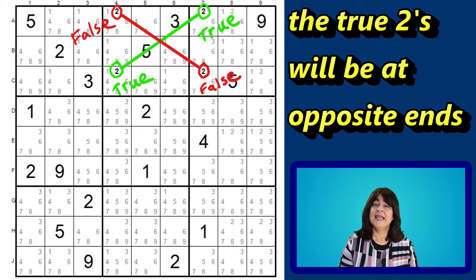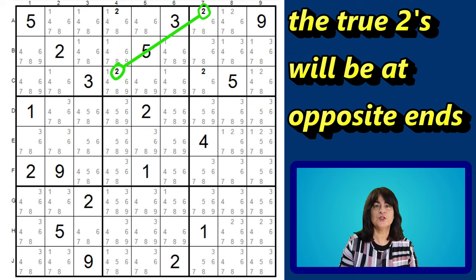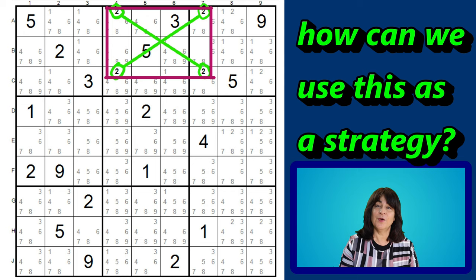In either case, the true twos will be at opposite ends of the X, or opposite ends of the rectangle. Alright, now that we understand what the X-wing pattern looks like, how can we use it as a solving strategy?